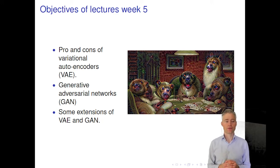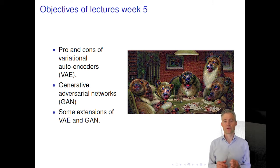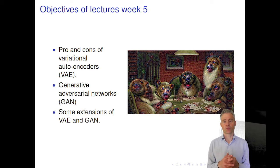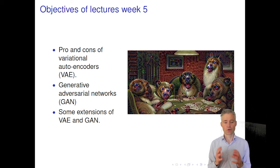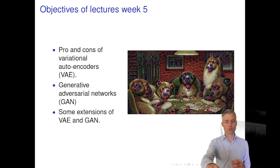Today I'll talk a little more about variational autoencoders to motivate the next model called generative adversarial networks. GANs, as they're called, have been very popular — the original GAN paper received more than 1000 citations in something like one and a half years, so it's something people are very excited about. Finally, I'll talk about a few extensions of these two models.